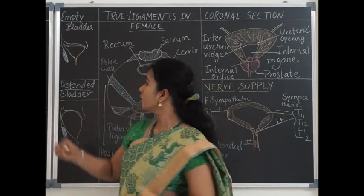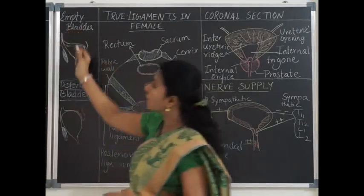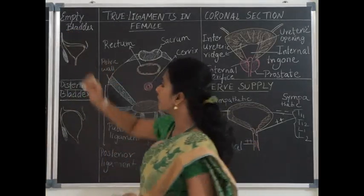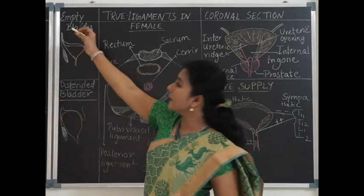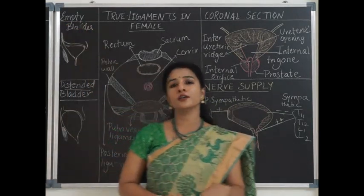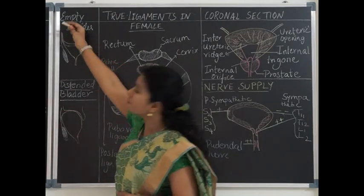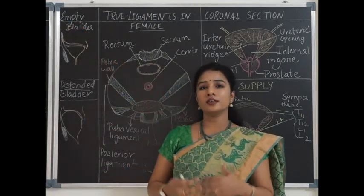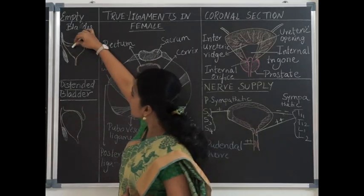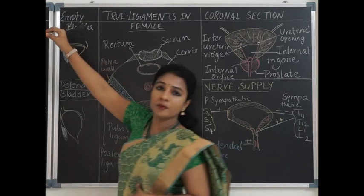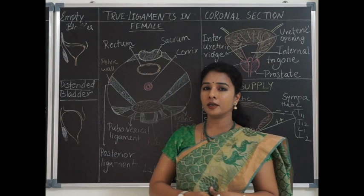From the apex, the urinary bladder is connected to the umbilicus by the median umbilical ligament, also called the urachus, which is the remnant of the allantois. If the allantois persists after birth, urine dribbles out from the umbilicus.